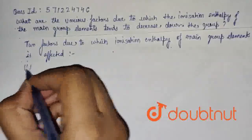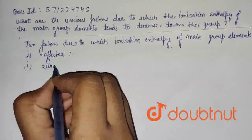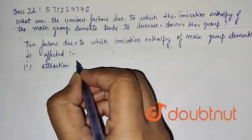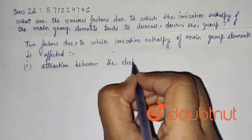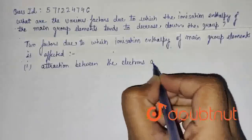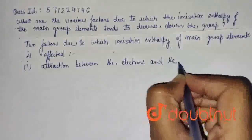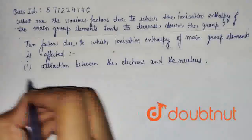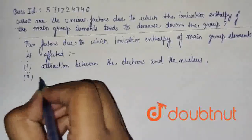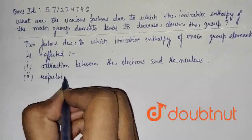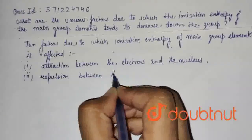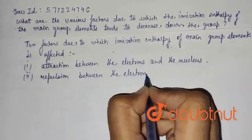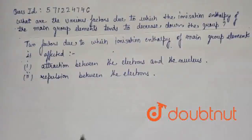The first one is the attraction between the electrons and the nucleus. The second one is the repulsion between the electrons. So these two factors are facts.